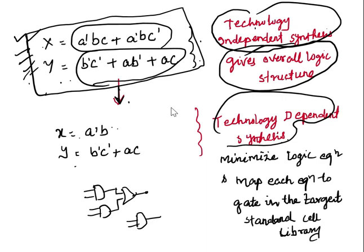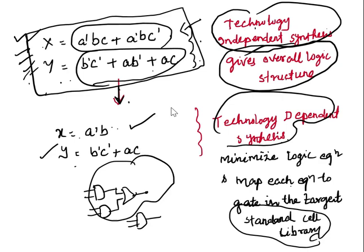After reduction, x and y equations are minimized and we get a circuit designed with the technology-dependent library using standard cells from that library. Technology-dependent synthesis performs two-step optimization: first technology-independent synthesis to get the general structure, then technology-dependent synthesis to further optimize and minimize the logic.